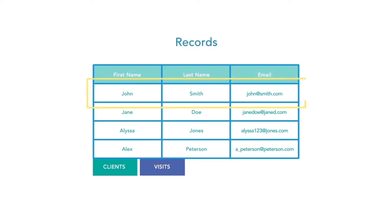A record in a table stores actual data about a given subject. For example, the first record in a client table might store information about a client like John Smith.